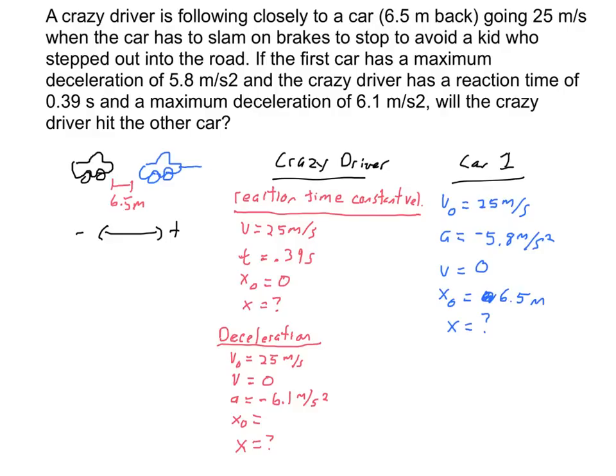This car is just going to decelerate and stop at some point over here, final velocity of zero. So, it's just going to decelerate, stop, try to avoid hitting the kid. Now, my crazy driver car, though, in black, and I'm going to use red to differentiate between the two, it's following 6.5 meters behind. So, notice I said here, my initial position of the first car is 6.5 meters.